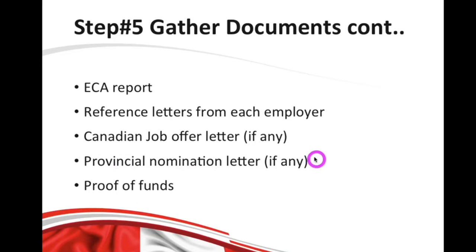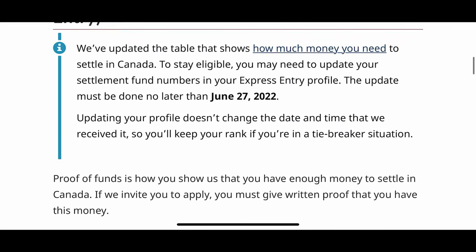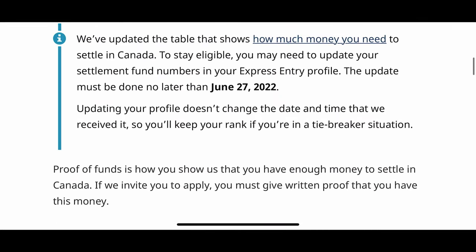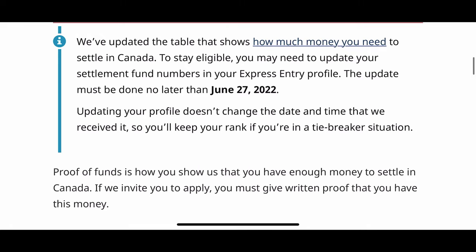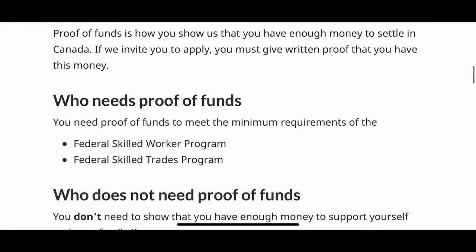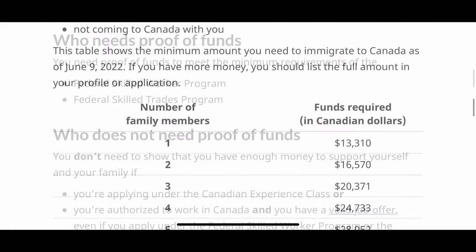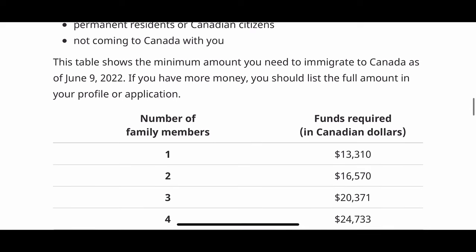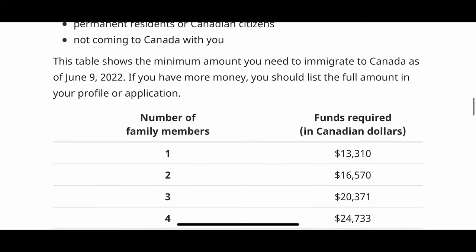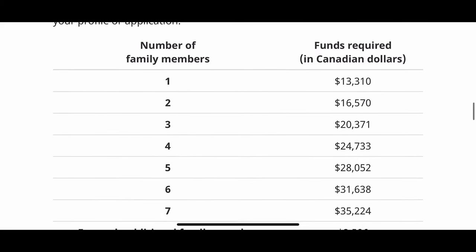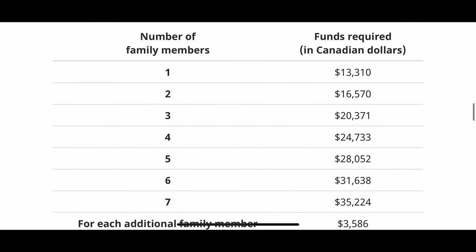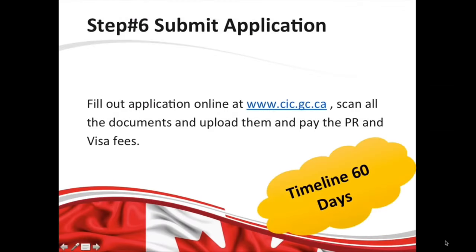Now let's talk about funds. You need to have a certain amount of savings in your bank account to show you have enough money to settle in Canada, so you will need to provide proof of funds. This table shows the minimum amount required to immigrate to Canada. If you have more money, you should list the full amount in your profile or application.